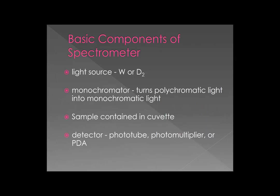That's given us four elements for a spectrometer. A light source — we'll talk about two: tungsten halogen and deuterium. A monochromator — that device turns polychromatic light into monochromatic, single-wavelength light. A cuvette — something to hold the sample, allow the light to be completely transmitted through, and provide a constant path length. And finally a detector — in this podcast I'll talk about phototubes and photomultipliers, and we'll cover photodiode arrays and charge-coupled detectors in a separate video.